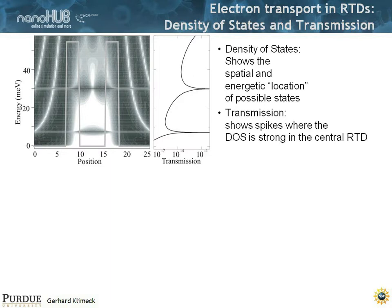Let's start with electrons. Here I'm plotting a resonant tunneling diode — a gallium arsenide one, actually a hypothetical RTD — where I chose a certain effective mass in this material. I'm showing a density of states that clearly shows when there is a high density of states in the resonant tunneling diode, I have a very nice transmission coefficient, and they are associated with each other.